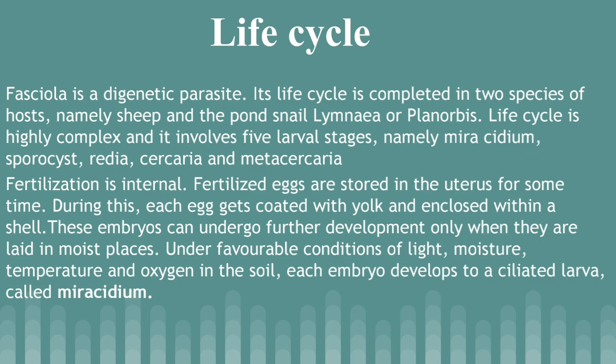Fasciola is a digenetic parasite. Its life cycle is completed in two species of host, namely sheep and the pond snail. The life cycle is highly complex and involves five larval stages: Miracidium, Sporocyst, Redia, Cercaria, and Metacercaria. Fertilization is internal. Fertilized eggs are stored in the uterus for some time, during which each egg gets coated with yolk and enclosed within a shell. These embryos can undergo further development only when laid in moist places. Under favorable conditions of light, moisture, temperature, and oxygen in the soil, each embryo develops into a ciliated larva called Miracidium.